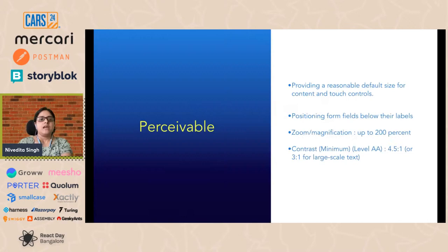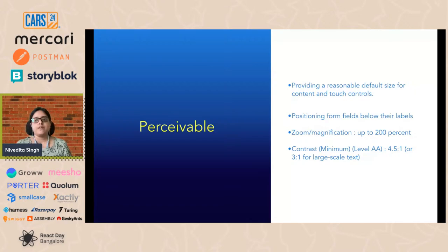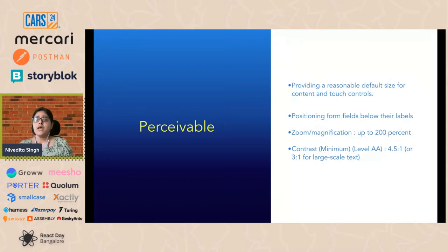The first principle: your content should be perceivable. Small screen sizes limit the information people can view at a time, so if they have to magnify the screen they will have to continuously scroll to perceive it. Fix this by providing a reasonable default size for content and touch controls, positioning form fields below their labels so users don't have to scroll horizontally, allowing magnification up to 200%, and ensuring a minimum Level AA contrast ratio of 4.5 to 1.